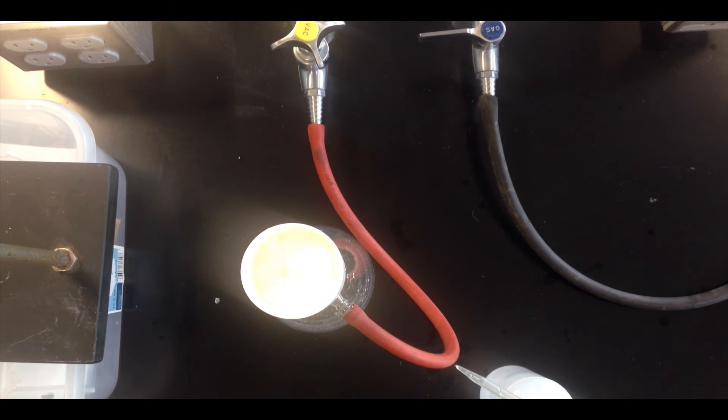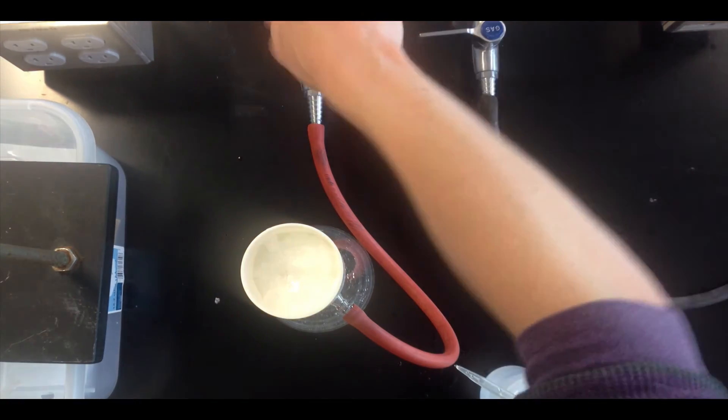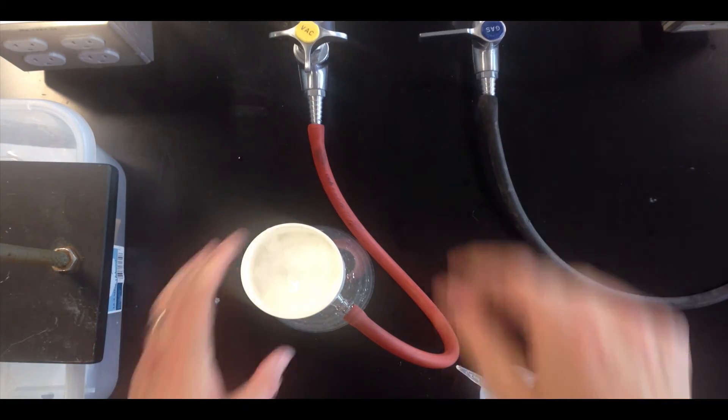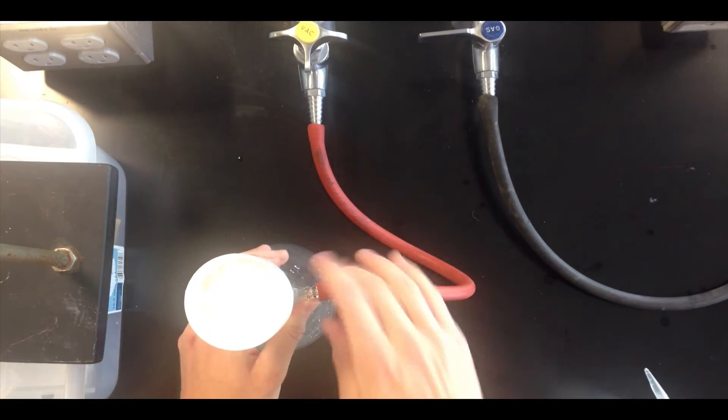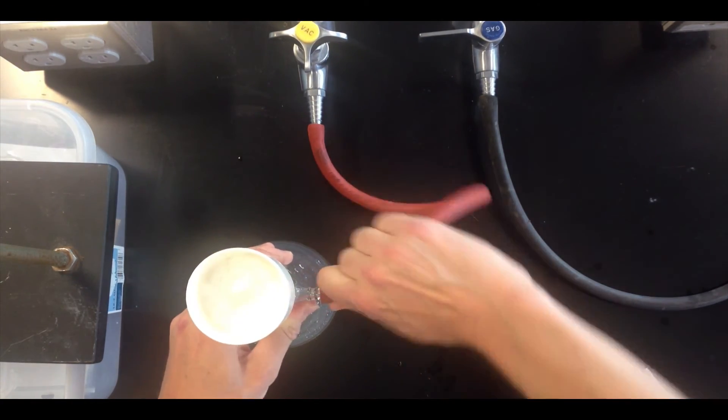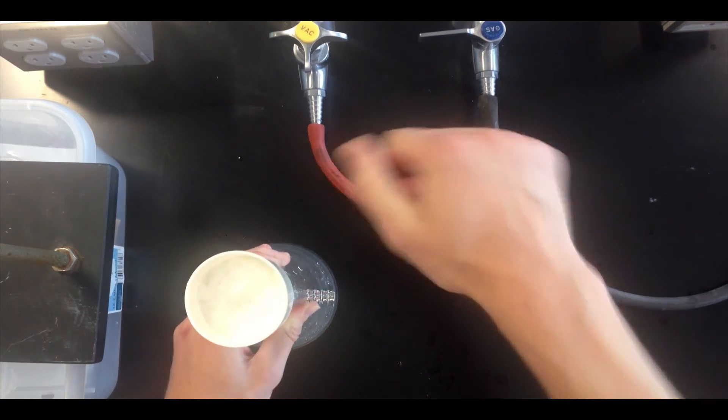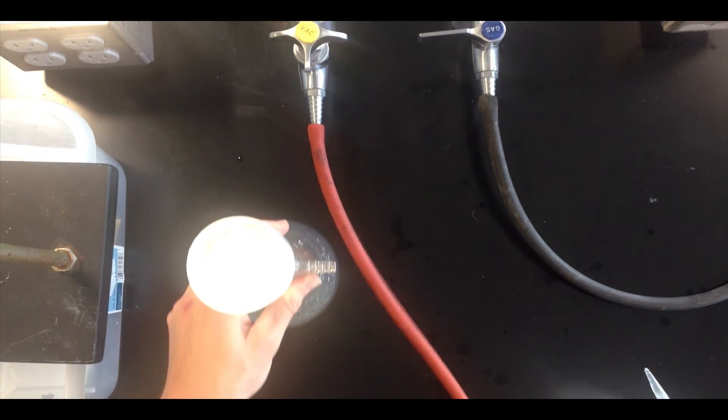That's pretty much all there is to vacuum filtration. When you're done, turn off the vacuum and break the vacuum. The easiest place to break the vacuum is probably where the sidearm meets the tubing, right here. You'll hear kind of a rushing sound when you remove the tubing, like so.